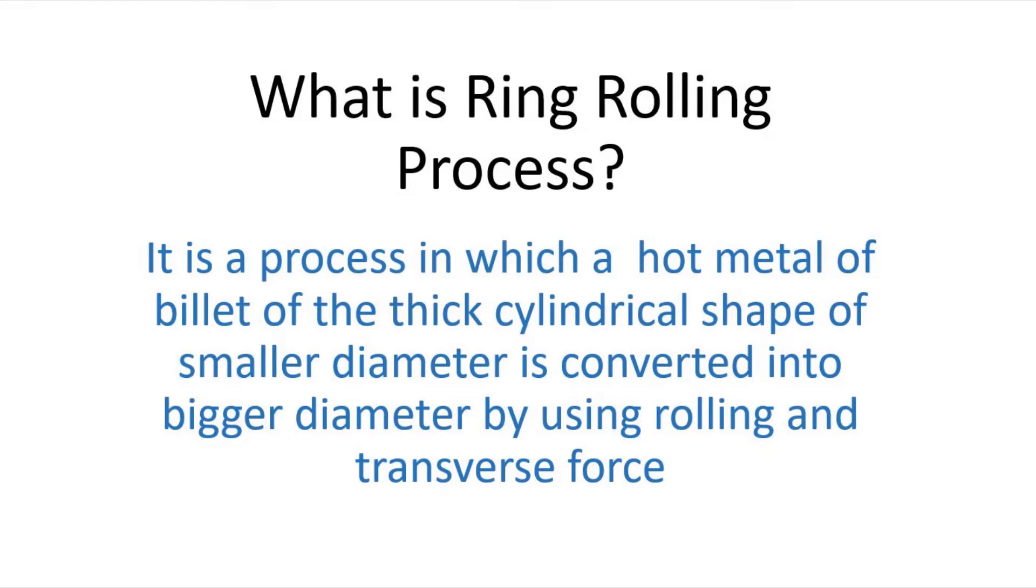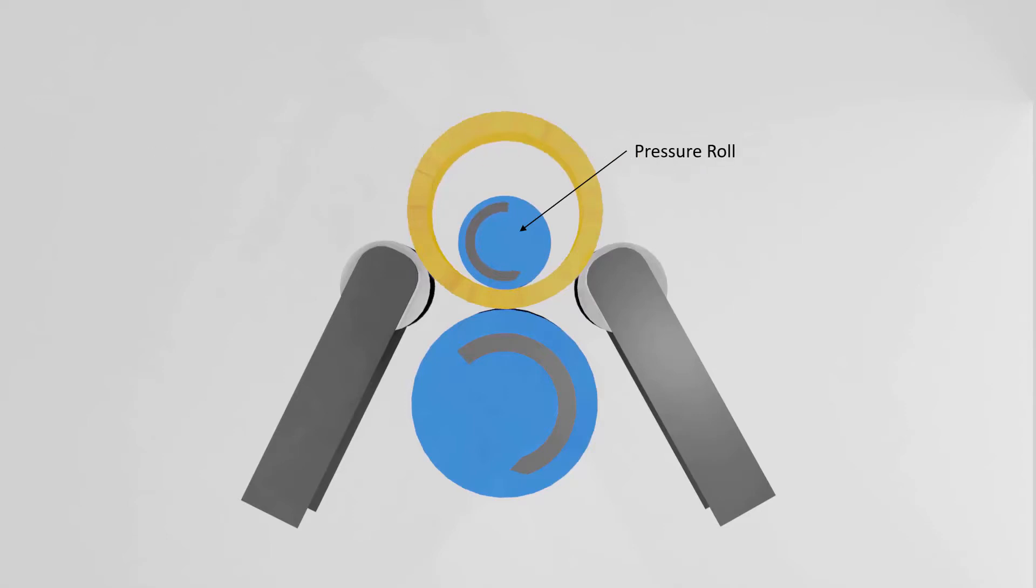Parts of the ring rolling process: The pressure roll exerts rolling as well as translational force on the metal billet. Guide rolls are used to guide the metal billet to make sure it is in the correct shape.